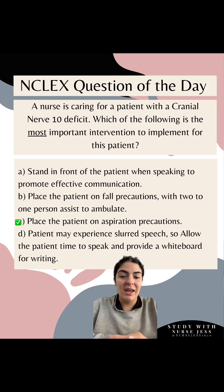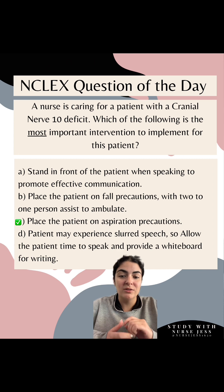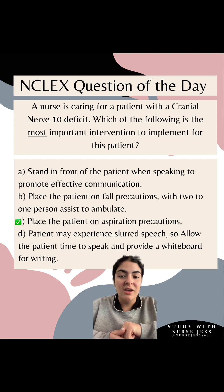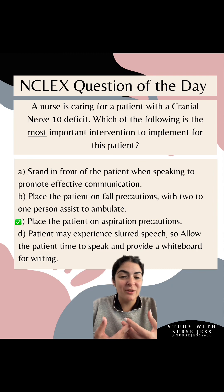Option A is referring to cranial nerve 6, the abducens nerve. And option D is actually referring to cranial nerve 12, the hypoglossal nerve — which controls motor function of the tongue, and a deficit would present with a deviated tongue. I hope you learned some strategies to tackle these questions. Follow for more.